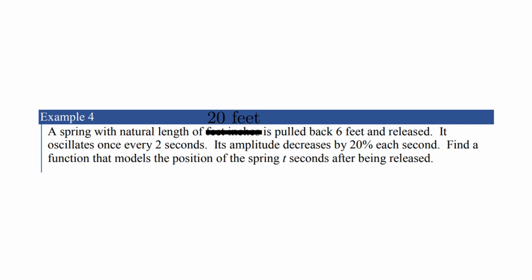Okay, so let's look at example 4 from the book in this section, section 7.4. A spring with natural length of 20 feet is pulled back 6 feet and released. It oscillates once every 2 seconds. Its amplitude decreases 20% each second. Find a function that models the position of the spring t seconds after being released. Take a moment and just sort of think about the bits of information and see if you can put it together into our model.